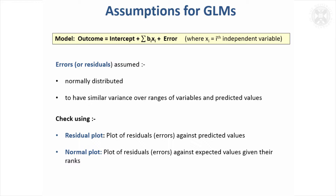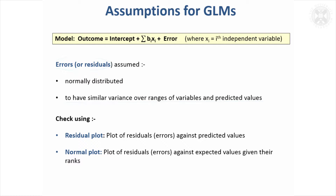Thinking about the assumption that the errors are normally distributed — sometimes these errors are called residuals, so that's just another bit of terminology to bear in mind — we expect them to be normally distributed and also to have similar variance over the range of variables and predicted values. Usually the way people check this is using something called a residual plot, which is simply a plot of residuals against their predicted values.